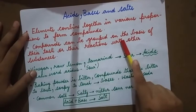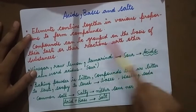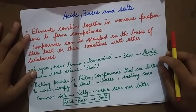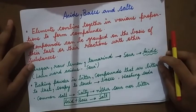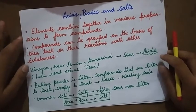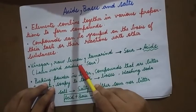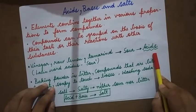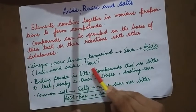Compounds can be grouped on the basis of their taste or their reactions with other substances. For example, vinegar, raw lemon, and tamarind are sour in nature and these are known as acids. The Latin word 'acidus' means sour.